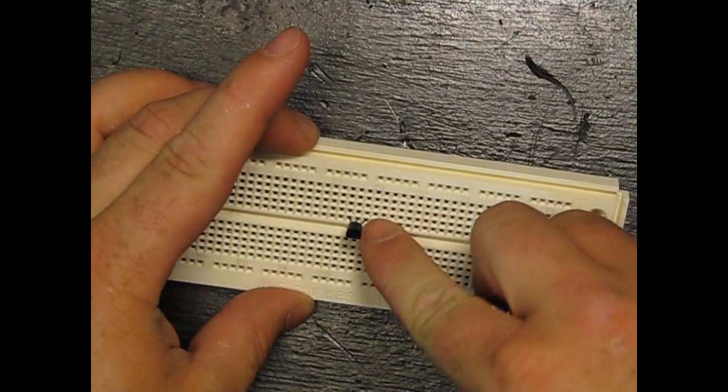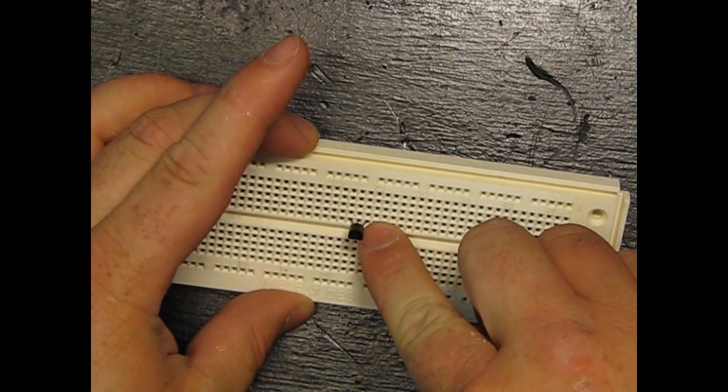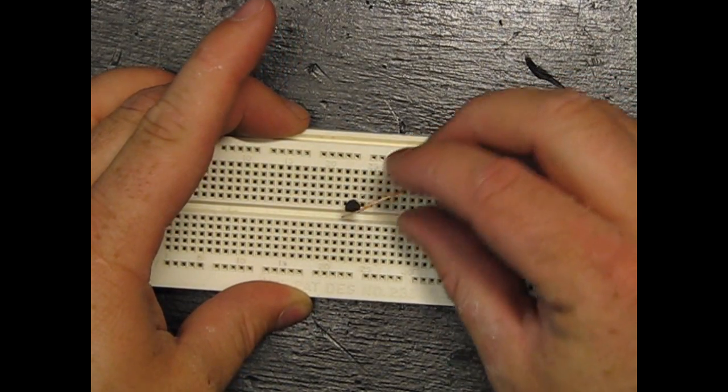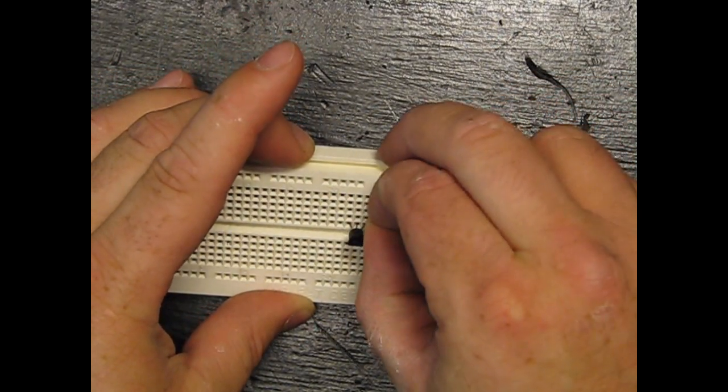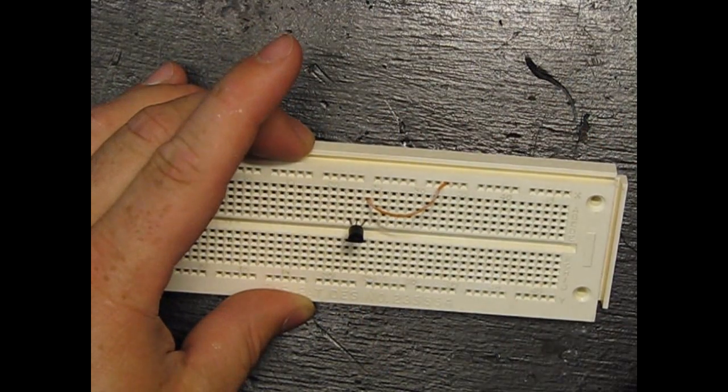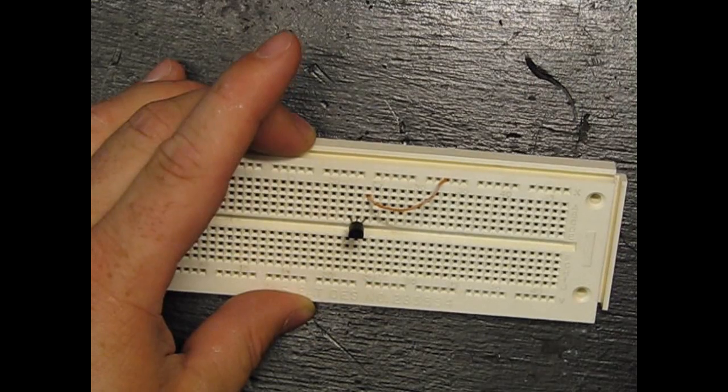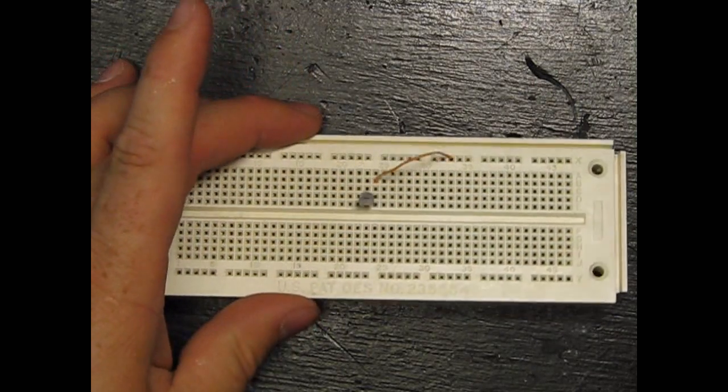So say if I wanted to connect this first pin to positive and this rail was positive, you can just take a little wire and go ahead and voila, you've made that connection. That way you're not actually soldering while you're trying to develop your project.